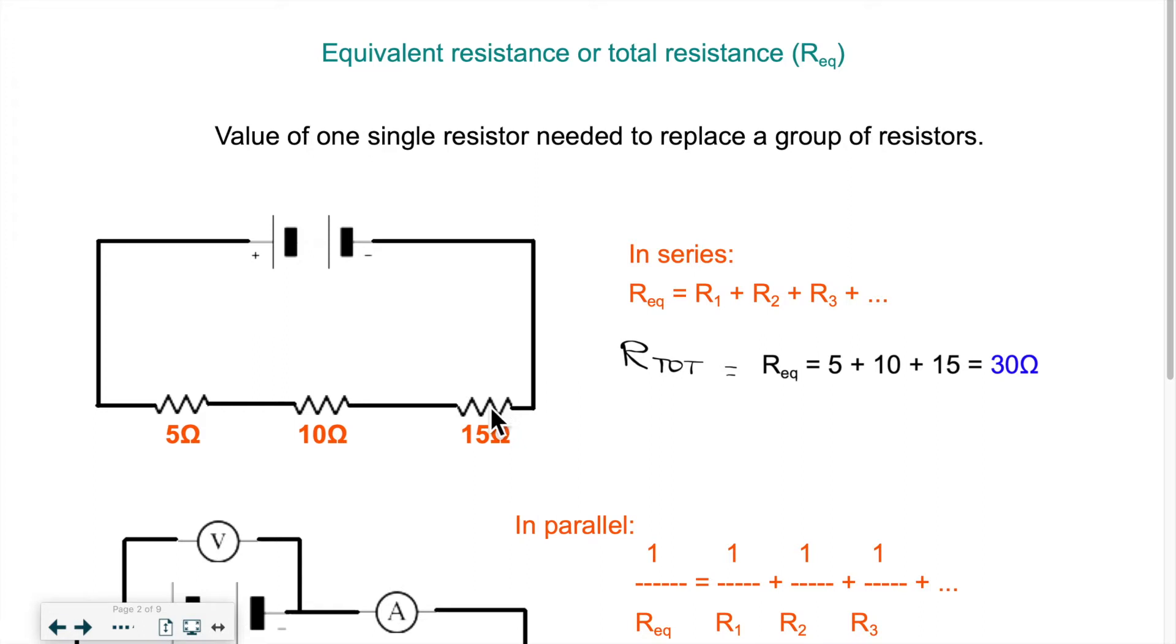So it can be useful sometimes when we have very complex circuits to calculate what the total resistance or equivalent resistance is. Let's say I have a circuit like this one that has three resistors, well maybe I want to simplify my setup and only use one resistor, but which resistor am I supposed to use to replace these three that don't have the same value?